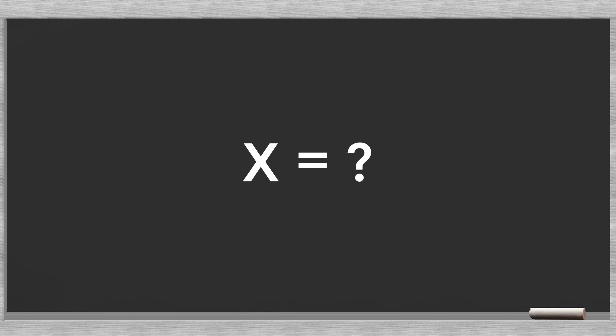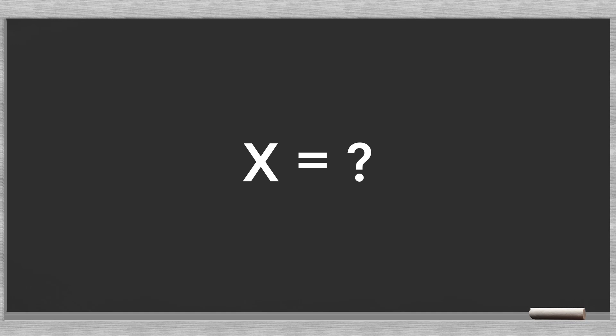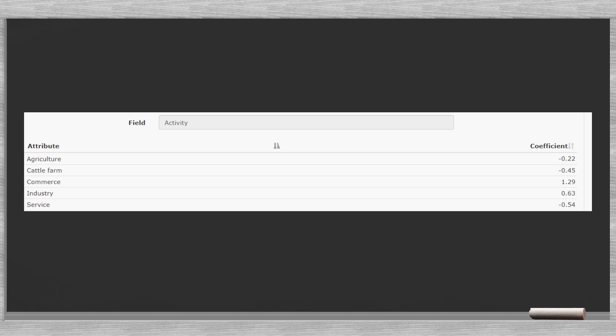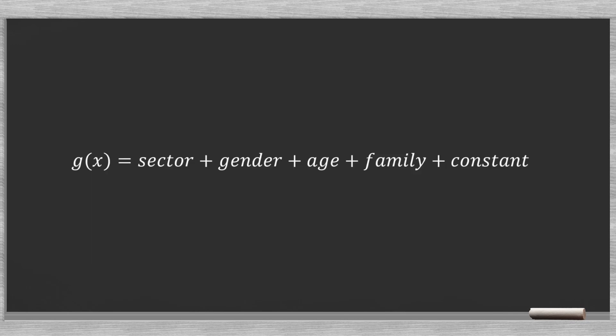Now that we have some intuition of the formula, we are going to replace the x with a linear function that includes a series of categorical data. Categorical means that the data can only have certain values that put them in groups. Categorical data cannot be summed. For example, we can look at the industrial sector of the client. This client either belongs to the category agriculture, or cattle farm, or commerce and so on.